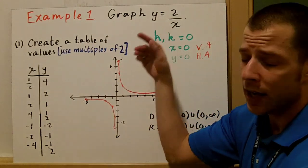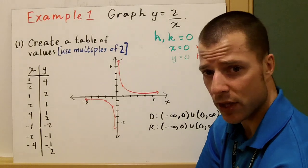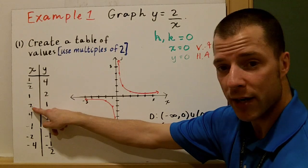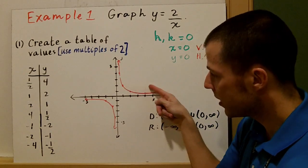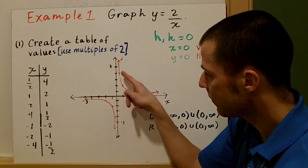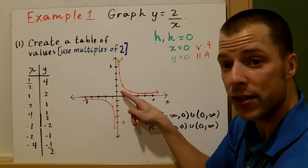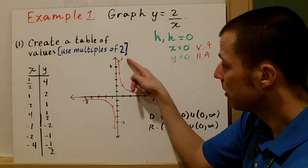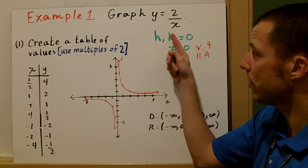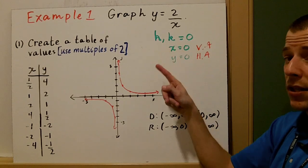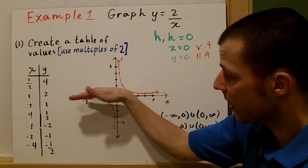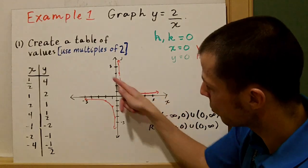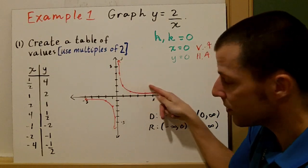If I plug one-half in for x, I get 2 divided by one-half, which is the same as 2 times 2, giving 4. Two divided by 1 is 2, and 2 divided by 2 is 1. You can see those points in the first quadrant: one-half gives 4, 1 gives 2, and 2 gives 1. I connect those points following my asymptotes. Since h and k are 0, both asymptotes are x equals 0 and y equals 0 — which are the axes themselves.